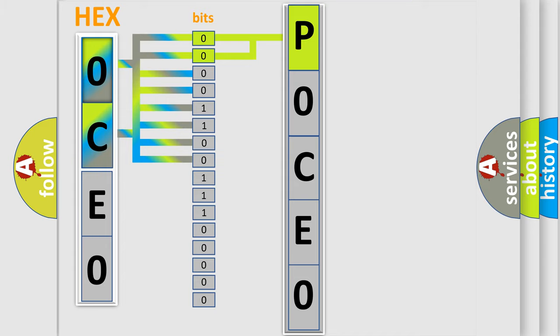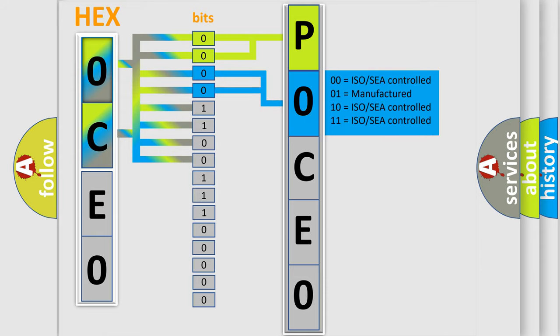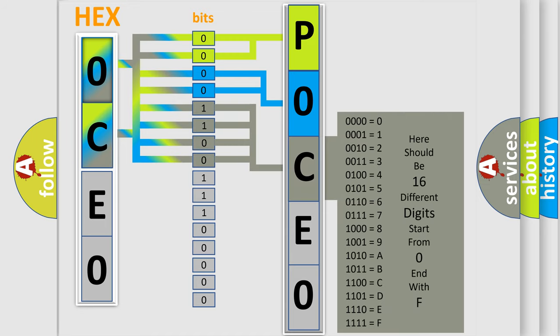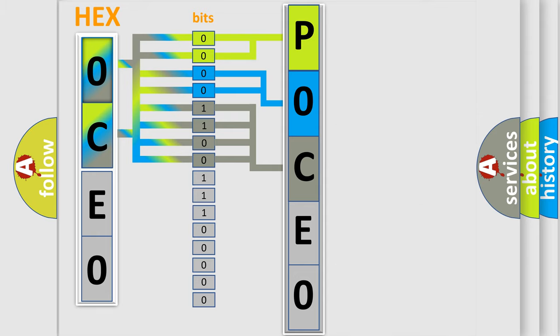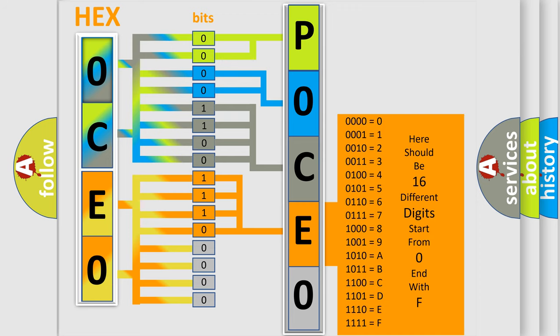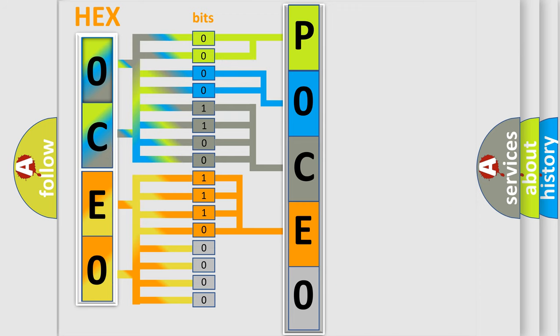The next two bits determine the second character. The last four bits of the first byte define the third character of the code. The second byte is composed of a combination of eight bits. The first four bits determine the fourth character of the code, and the combination of the last four bits defines the fifth character. A single byte conceals 256 possible combinations.